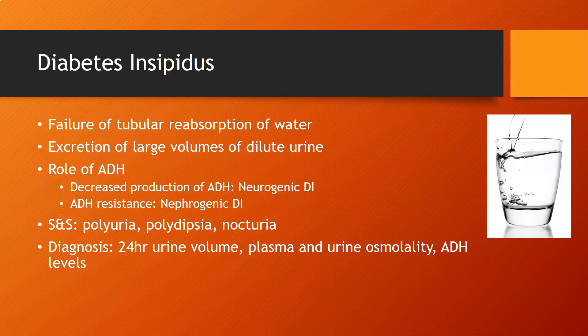Diagnosis of diabetes insipidus typically uses a 24-hour urine volume, which would be greatly increased, along with plasma and urine osmolality showing the urine as very dilute and the plasma as concentrated. ADH levels help determine whether it is neurogenic or nephrogenic DI.